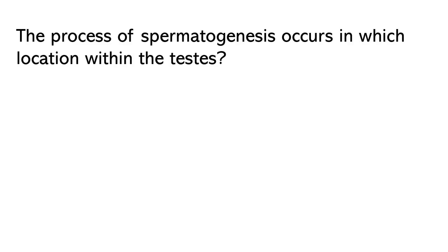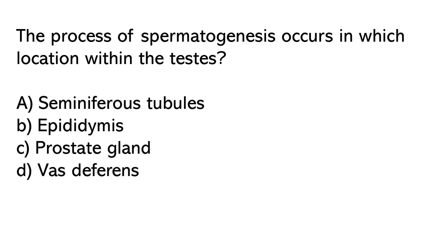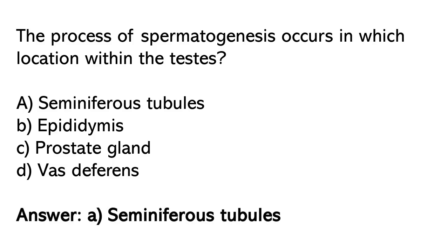The process of spermatogenesis occurs in which location within the testes? Options: A) Seminiferous tubules, B) Epididymis, C) Prostate gland, D) Vas deferens. So the correct answer is option A. Seminiferous tubules.